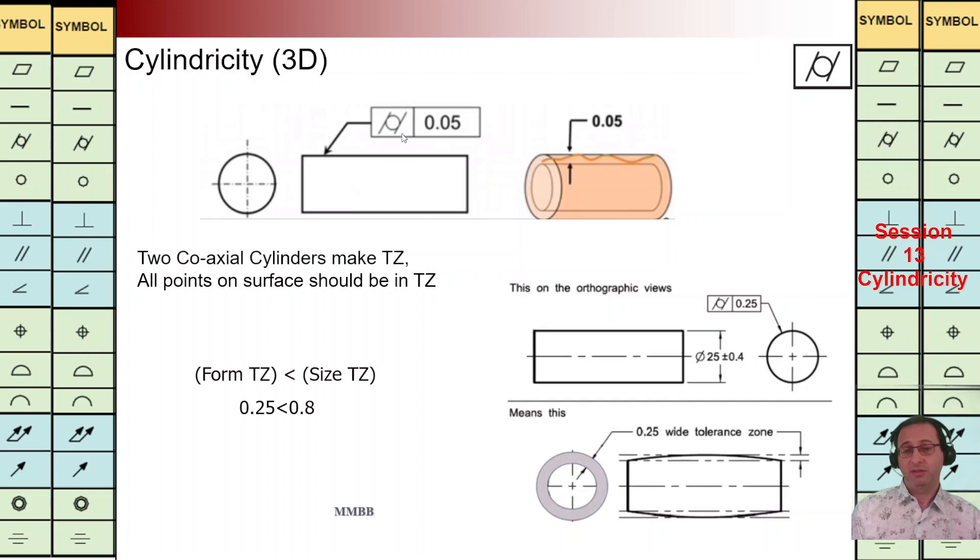Whenever we have this cylindricity symbol, it means we are going to have two coaxial cylinders. By adding this diameter to TZ, we can calculate the outer boundary, and diameter minus this TZ, we can calculate the inner boundary of that tolerance zone. Let's see this example.